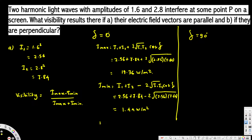Now we can calculate the visibility: V = (Imax − Imin) / (Imax + Imin) = (19.36 − 1.44) / (19.36 + 1.44) = 0.86. So for the case where the electric field vectors are parallel, the visibility is 0.86.